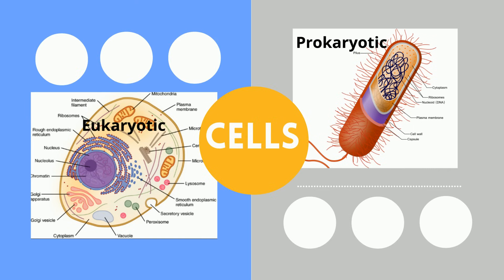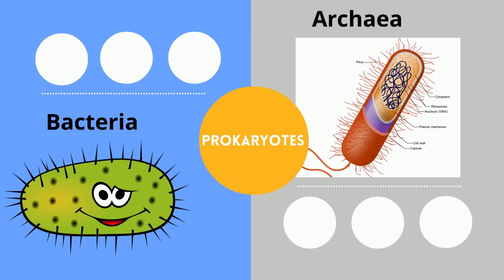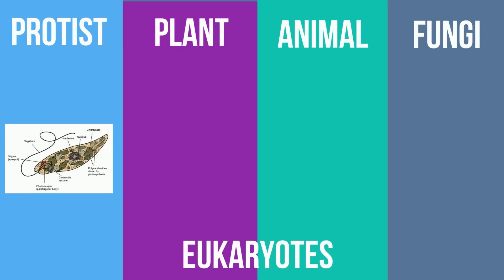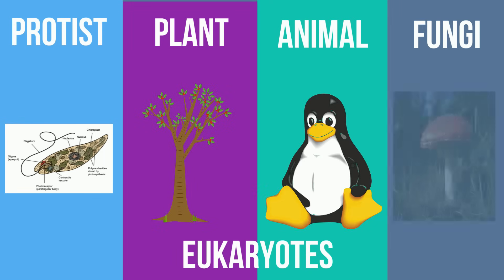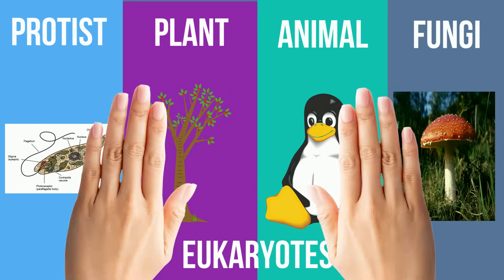Prokaryotes can be classified as either bacteria or archaea. Eukaryotes are classified as protists, plants, animals, or fungi. A prokaryotic cell is smaller.